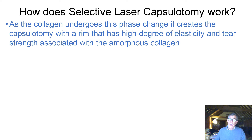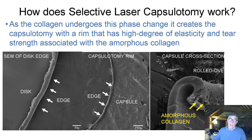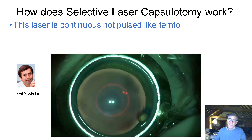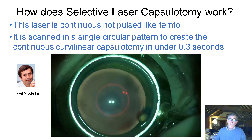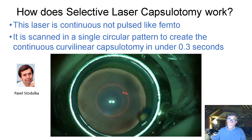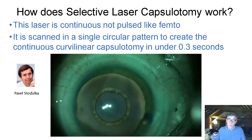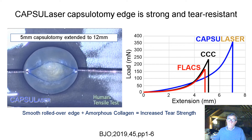As the collagen undergoes this phase change, it creates the capsulotomy with a rim that has a high degree of elasticity and tear strength associated with amorphous collagen. SEMs of the disc edge show that on the left the edge is rolled over, and on the right a cross-section highlights where the amorphous collagen is. The laser is continuous but not pulsed like femto — it's a scanned laser operating in a single circular pattern to create the curvilinear capsulotomy in under 0.3 seconds. We can see the laser focused with two dots, and once it fires, the capsulotomy is created and is well-centred.